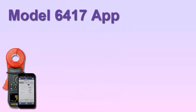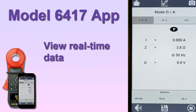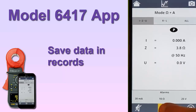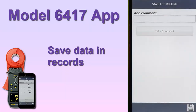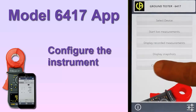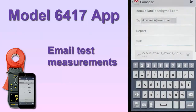The Ground Tester 6417 app enables users to connect to a Model 6417 via Bluetooth. Once connected, you can view data currently being measured by the instrument in real-time, save measurement data in a record on the instrument, view previously stored data records, change configuration settings on the instrument, and email test results.